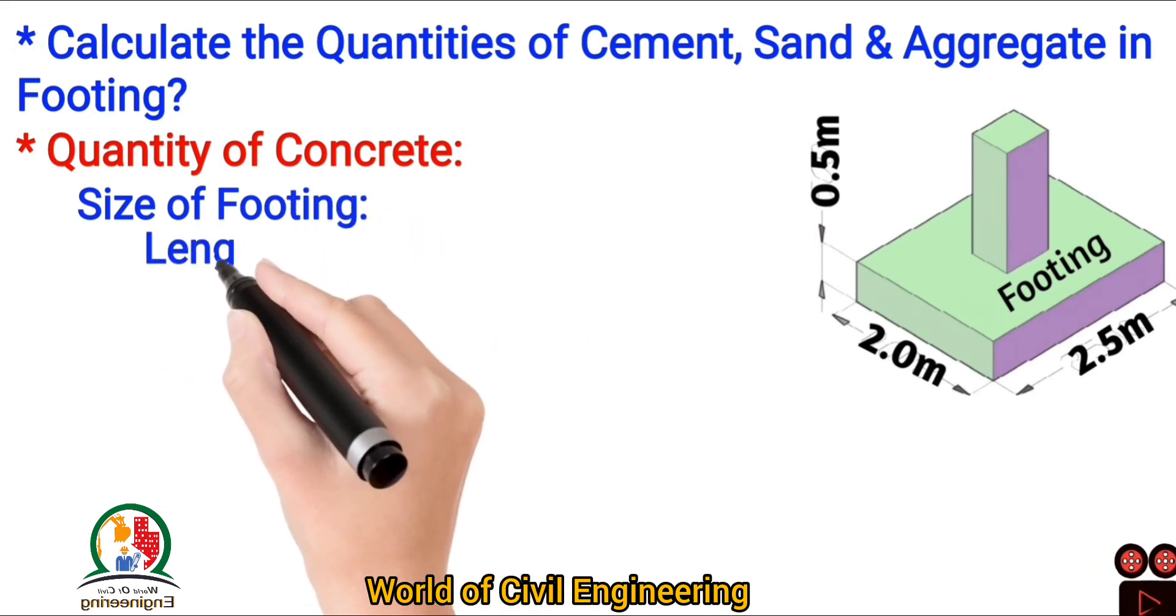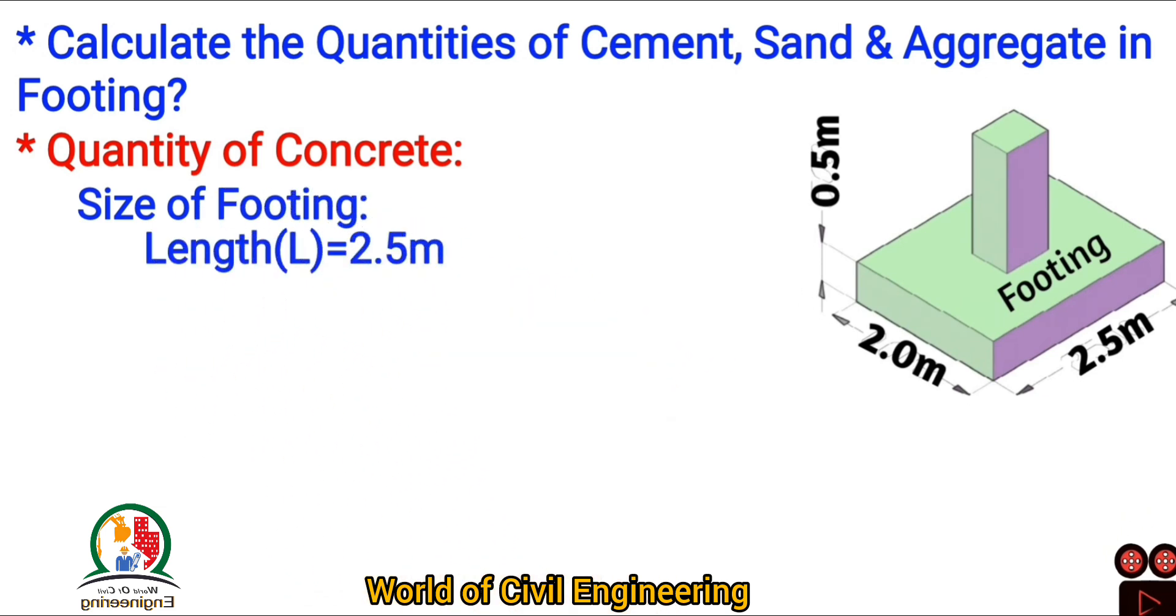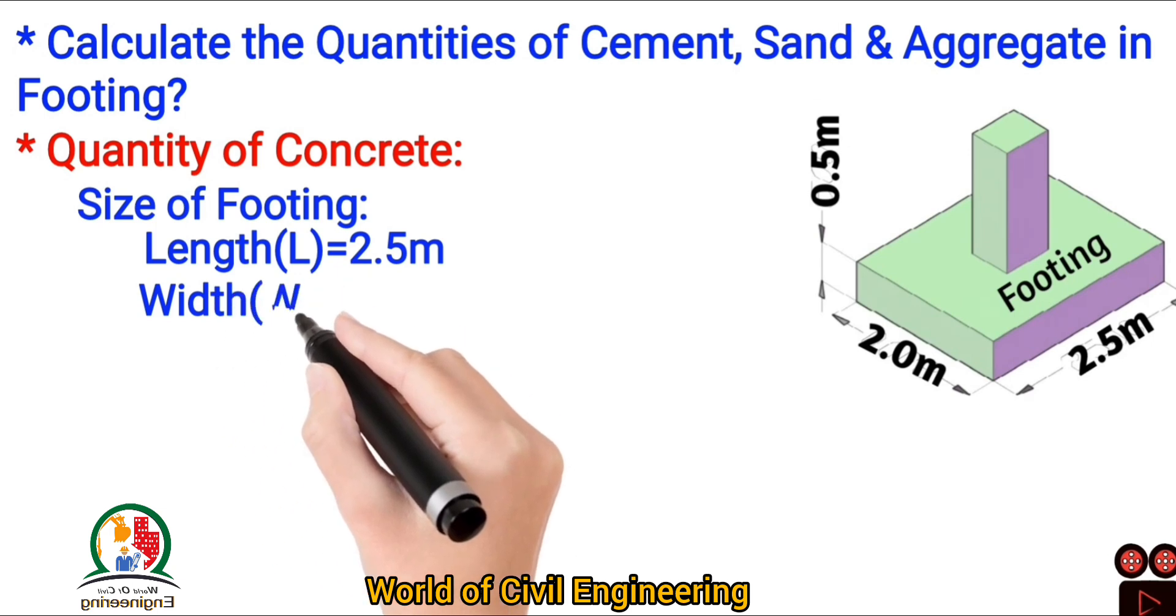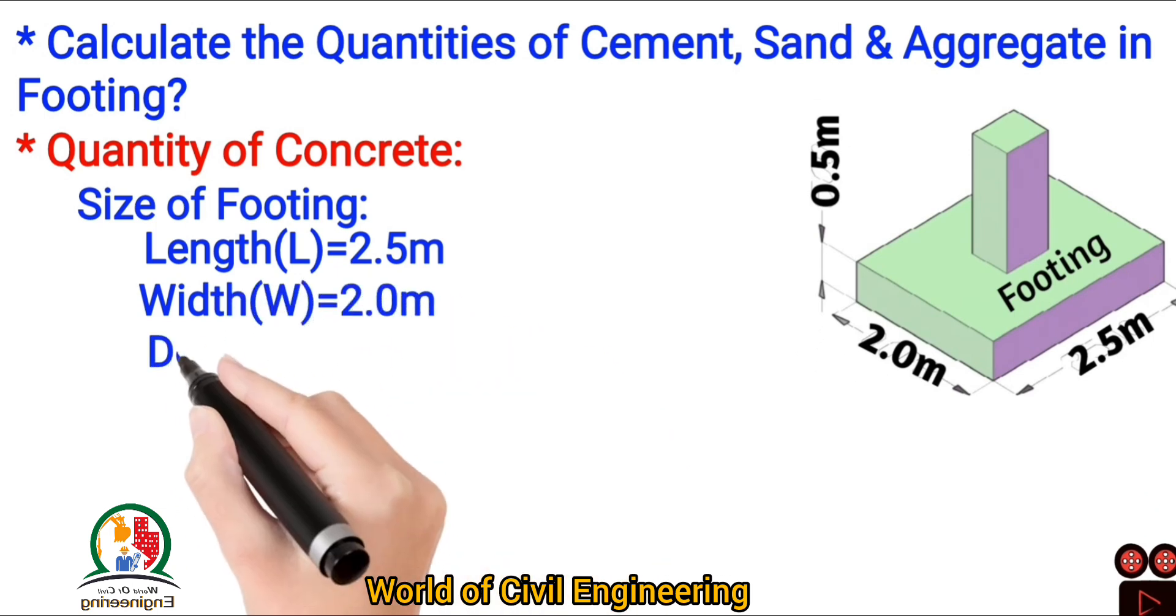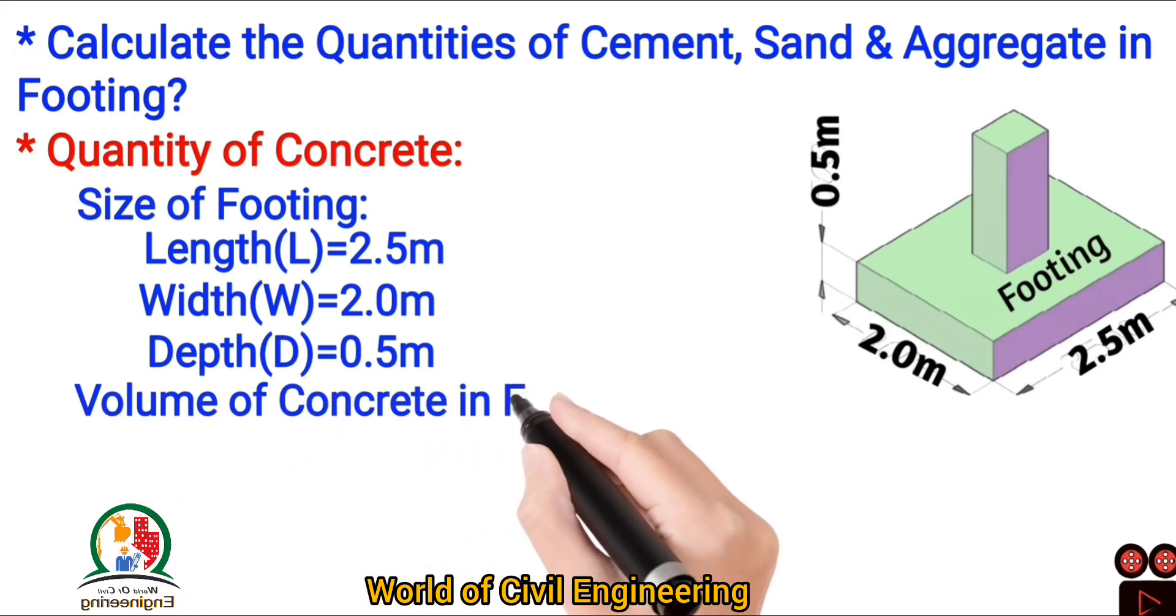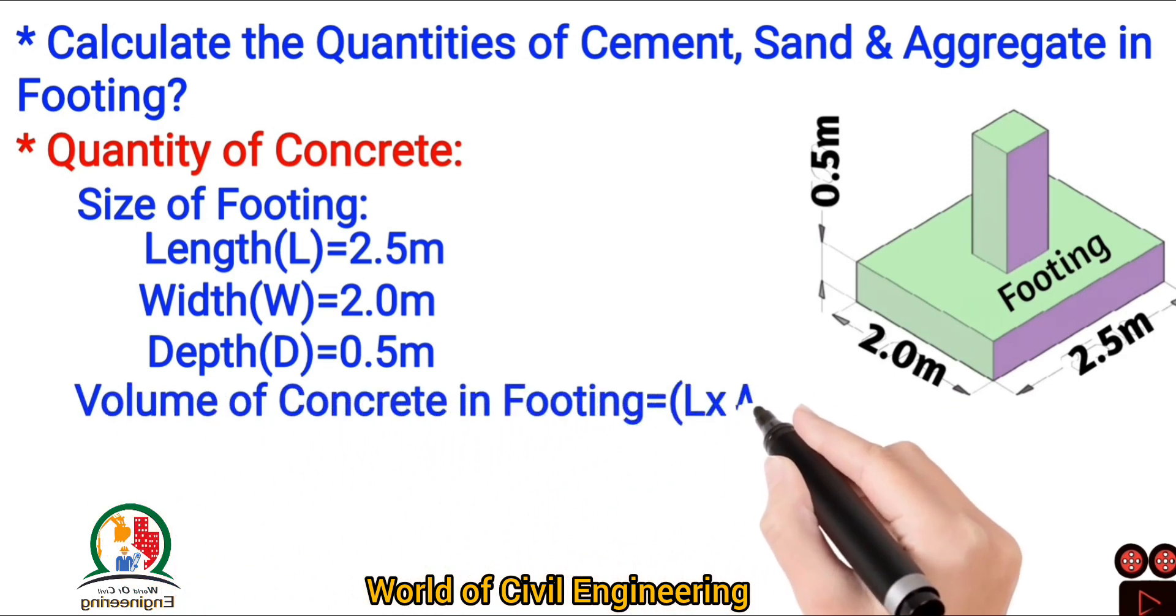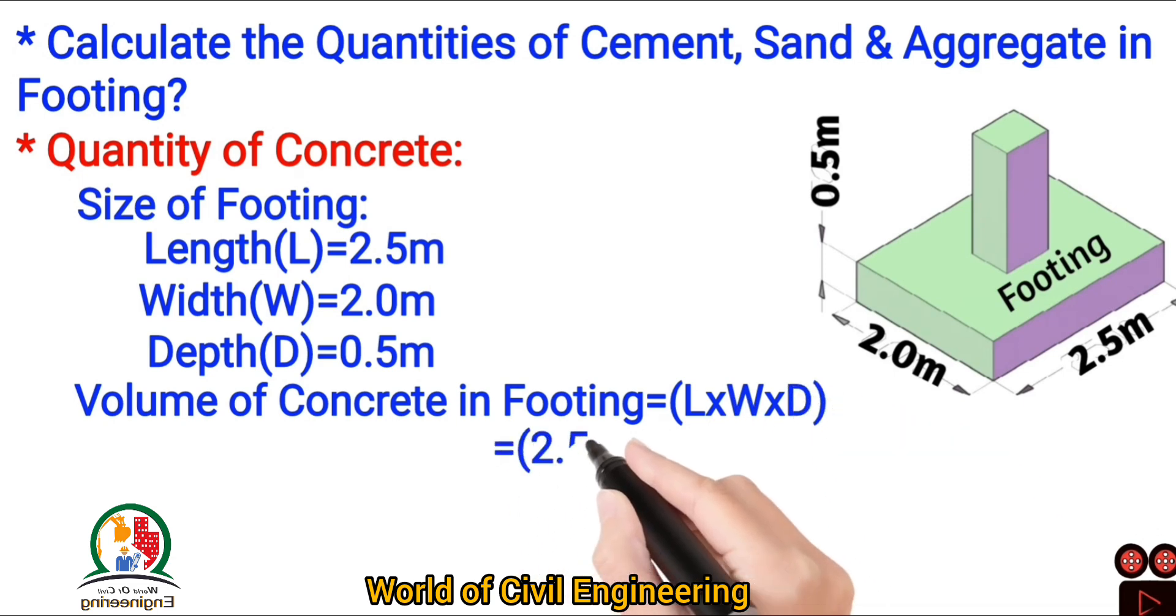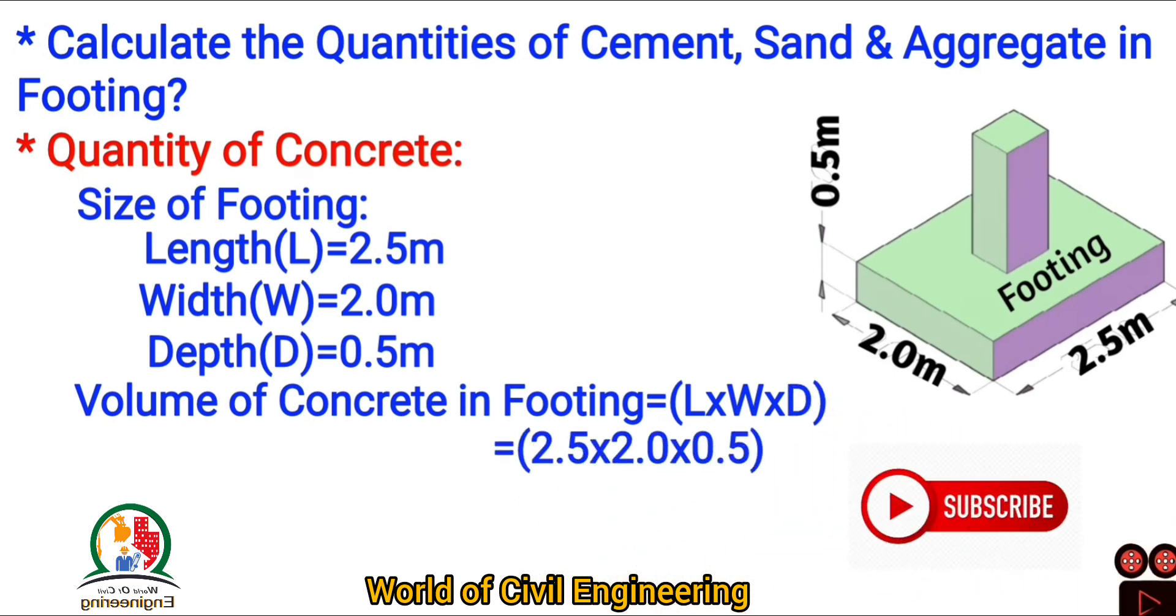Quantity of concrete. Let the size of footing: length L equal to 2.5 meter, width W equal to 2 meter, depth D equal to 0.5 meter. Volume of concrete in footing equal to length into width into depth equal to 2.5 into 2 into 0.5 equal to 2.5 meter cube.